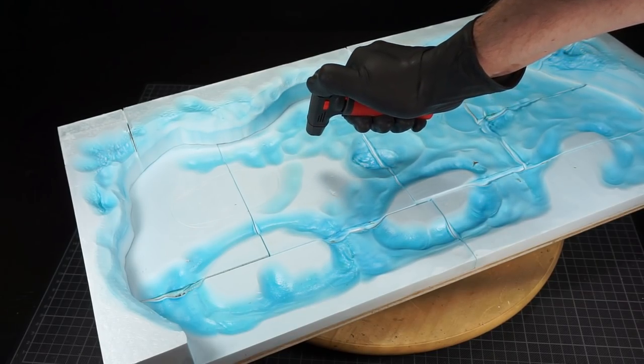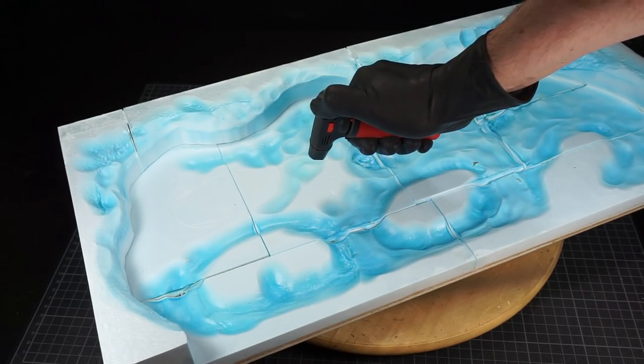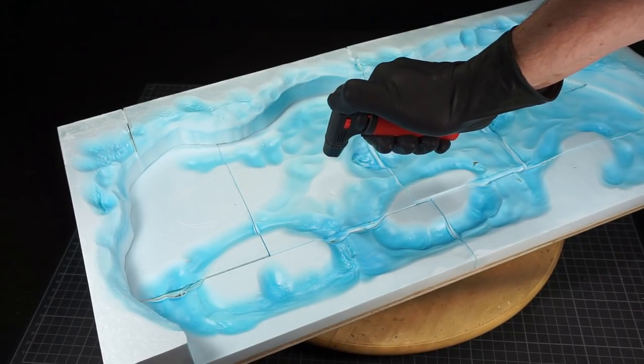With the foam attached I then create some areas of depth onto the board. I've used a hobby blowtorch to do this.